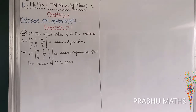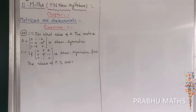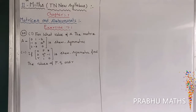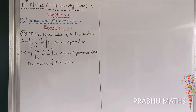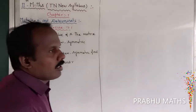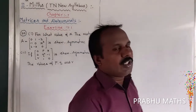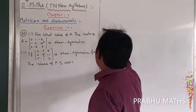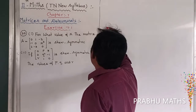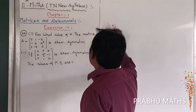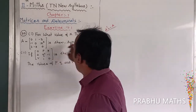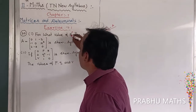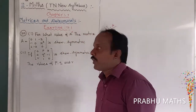This is example 7.1. We are going to find the value of X. The matrix is a 3 by 3 skew matrix. A skew matrix means A transpose is equal to minus A. That is the definition of a skew matrix. It is a skew matrix, so we need to find the value of X.